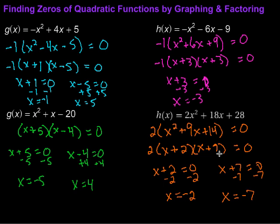Now, if you would graph this function, where do you think it would cross the x-axis? At negative 2 and negative 7. So, finding zeros of quadratic functions by graphing and factoring.